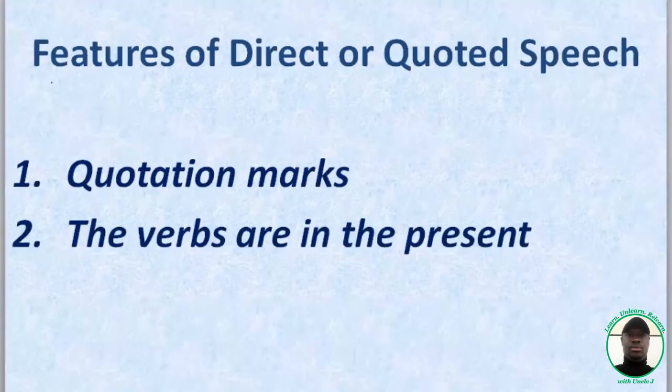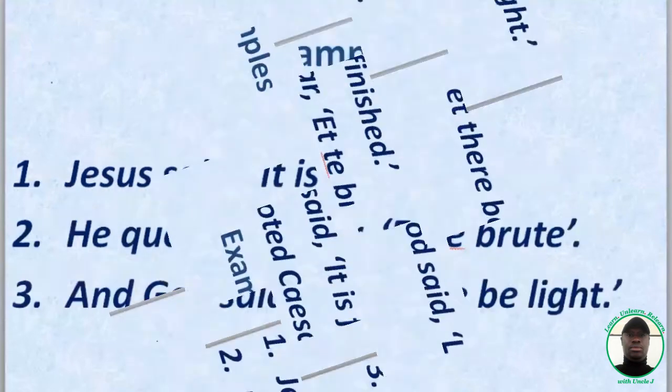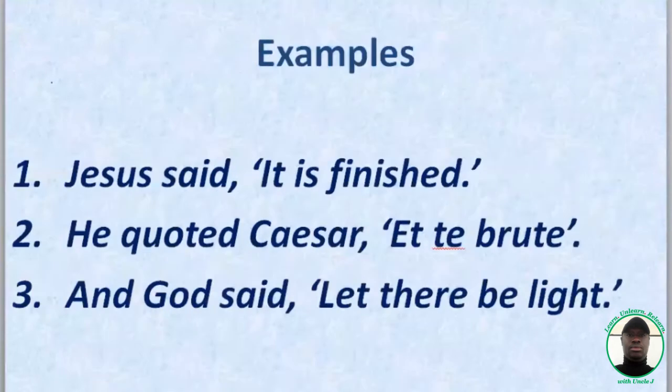The features of a direct or quoted speech: you must have quotation marks. The verbs must also be in the present. For example, Jesus said, 'It is finished.' There are quotation marks here, and the verb is in the present — 'is.'